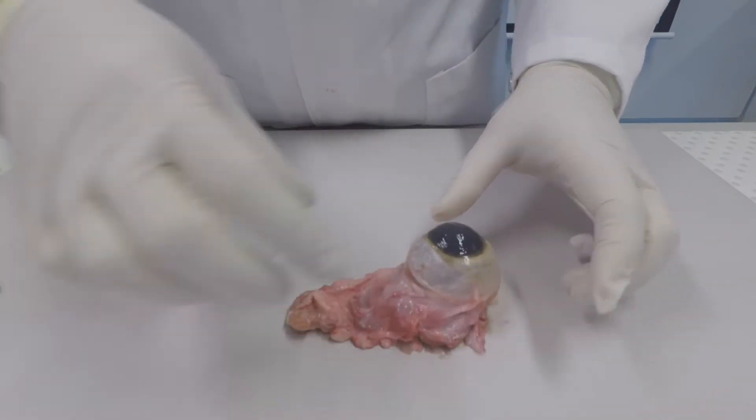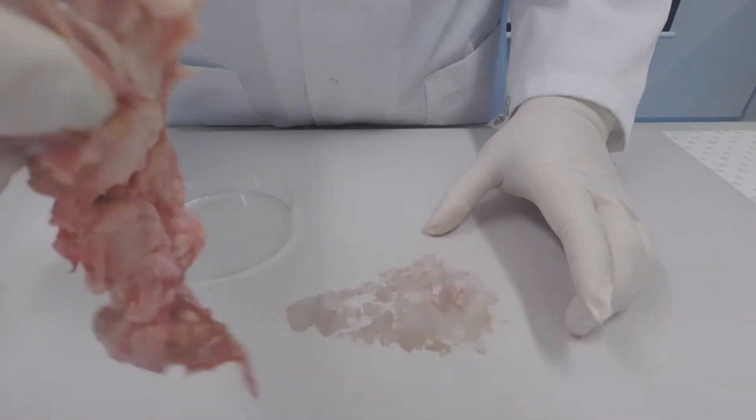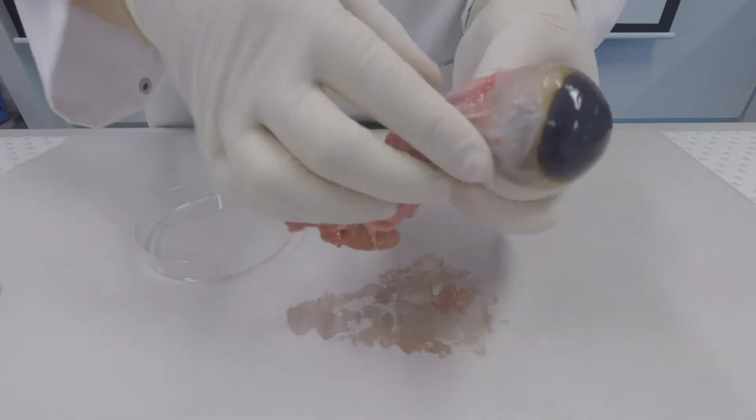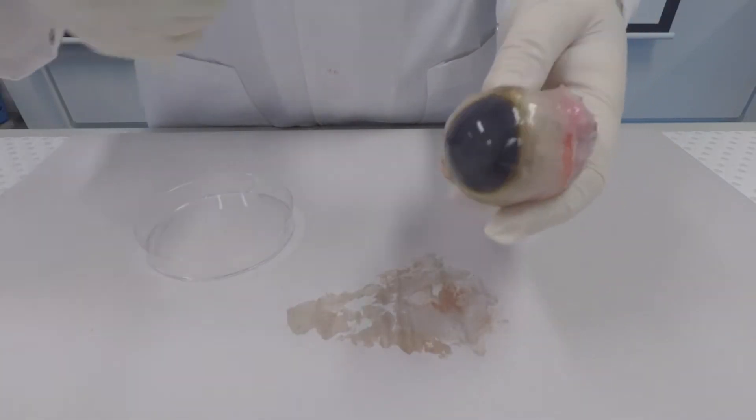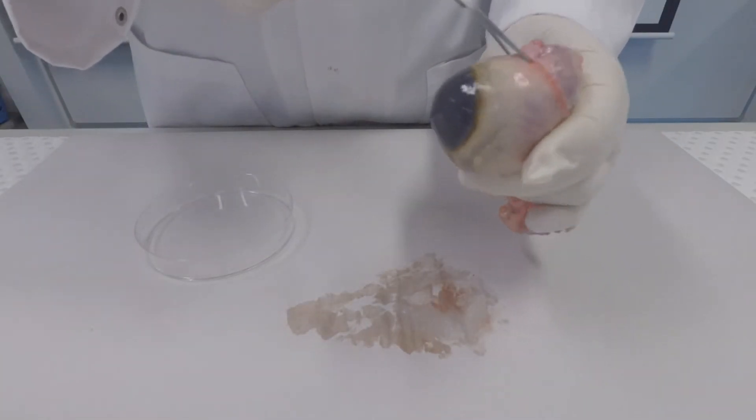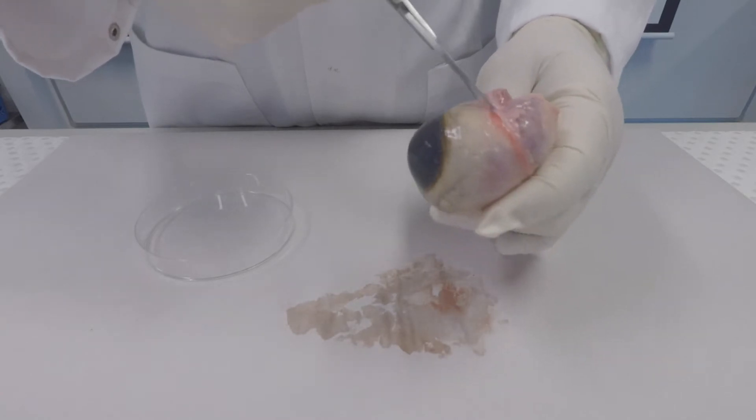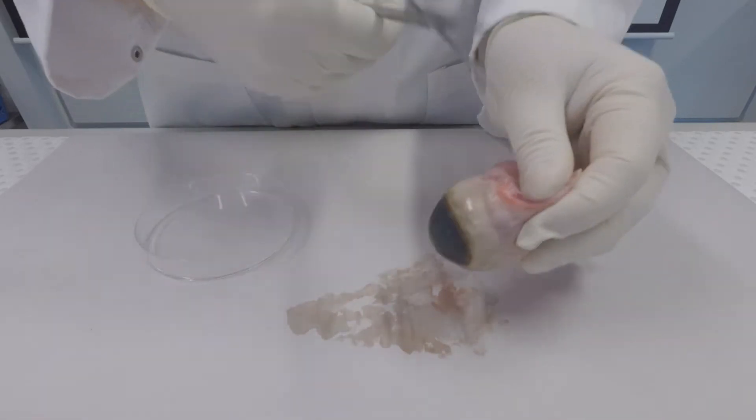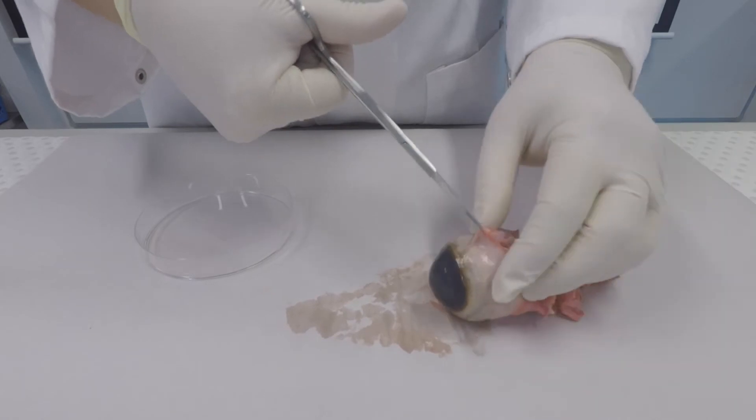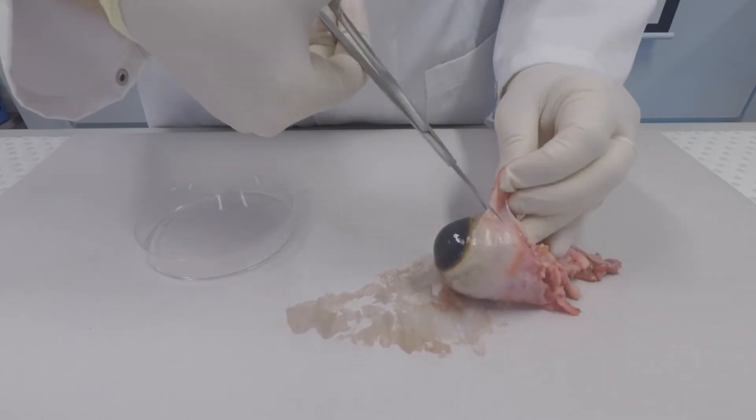The outer portion of the eyeball is called the sclera. It's very tough as you can tell. The front portion of the eye is called the cornea, and that is the part that is exposed to the environment.